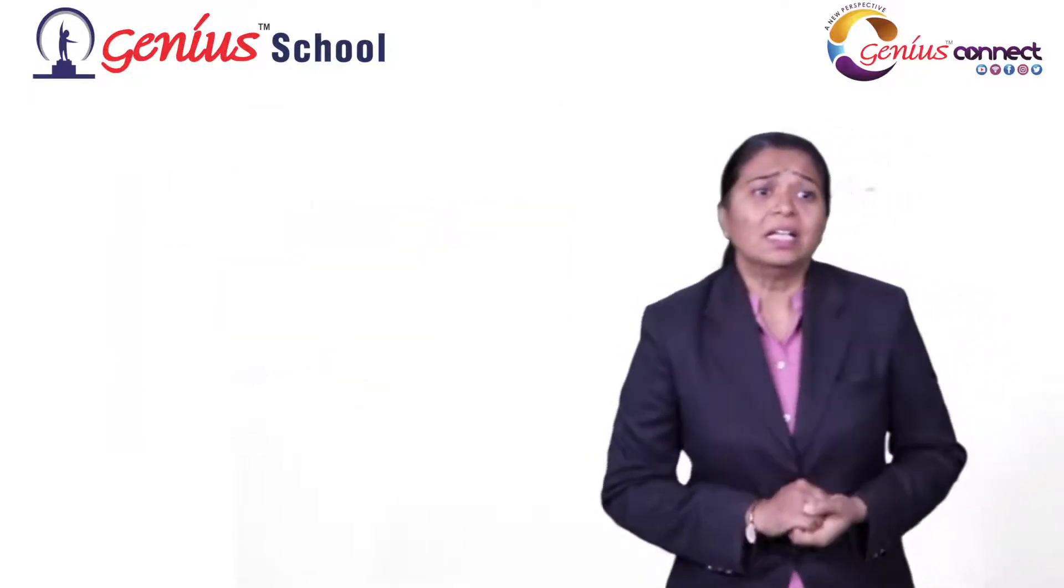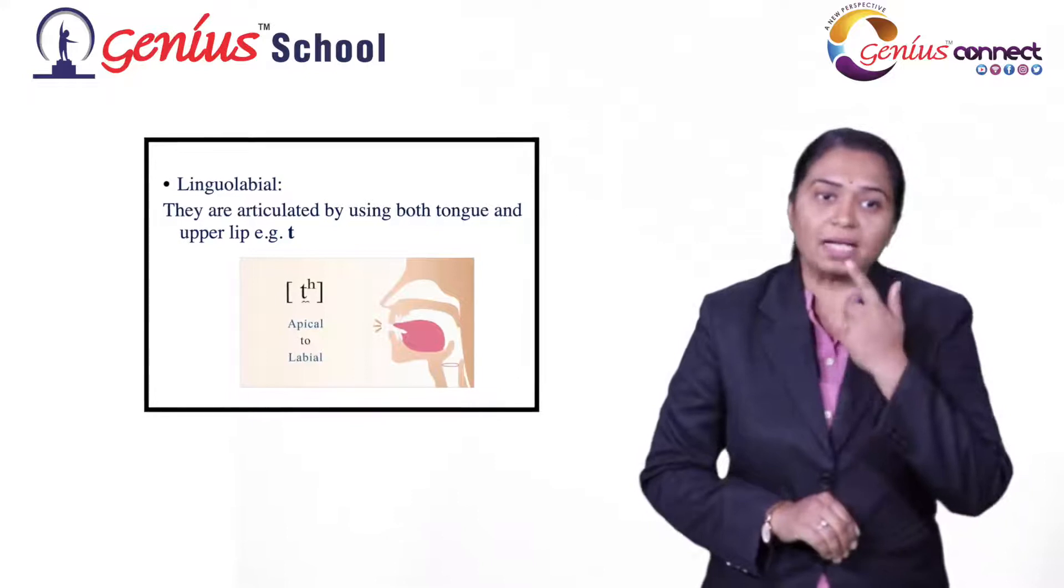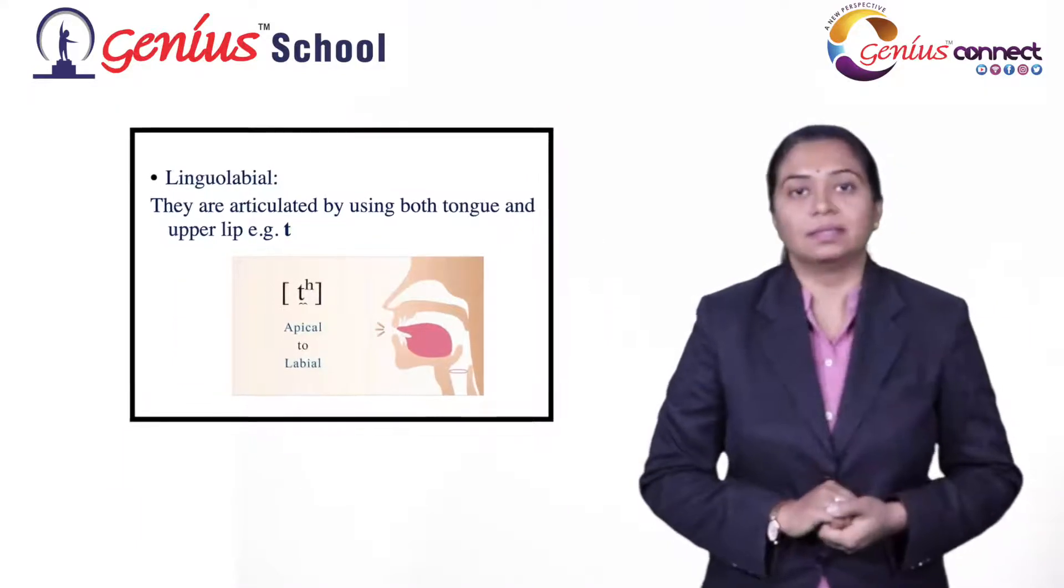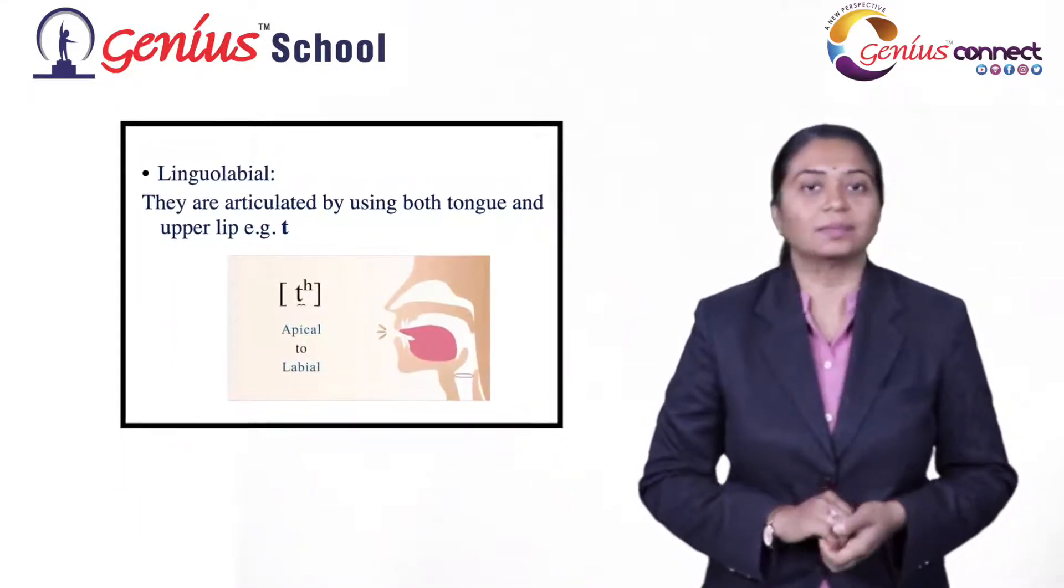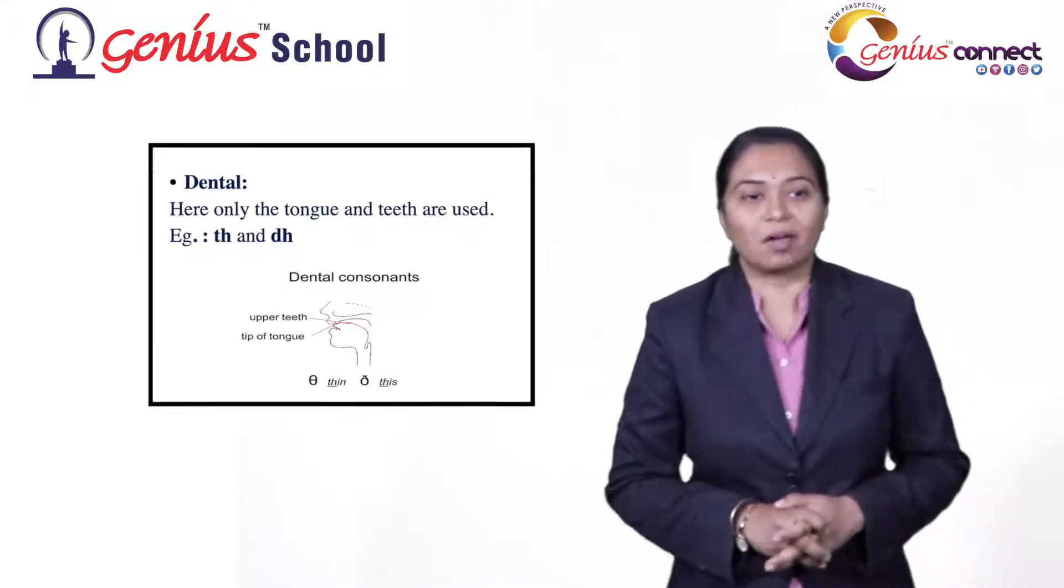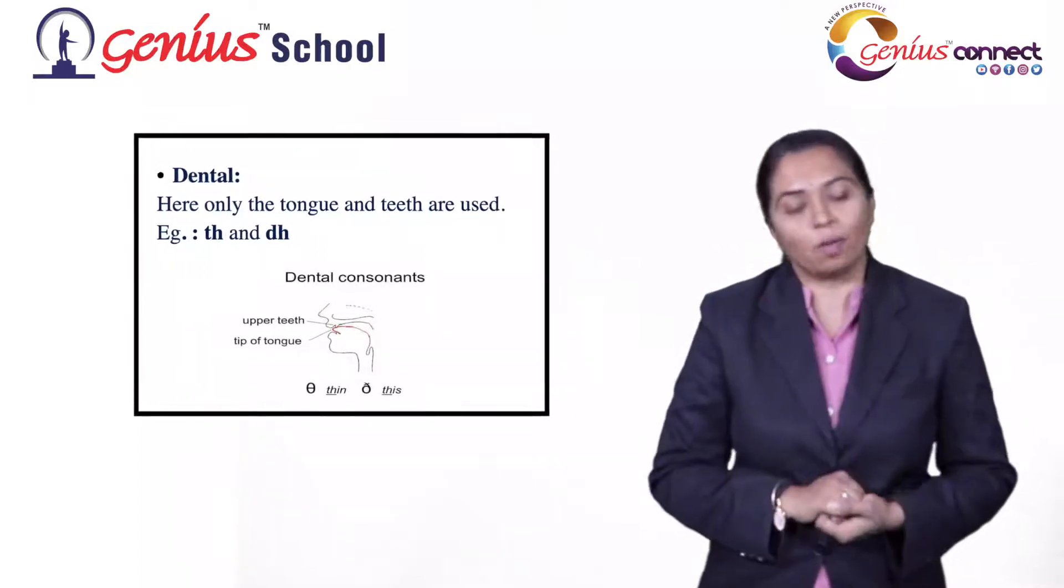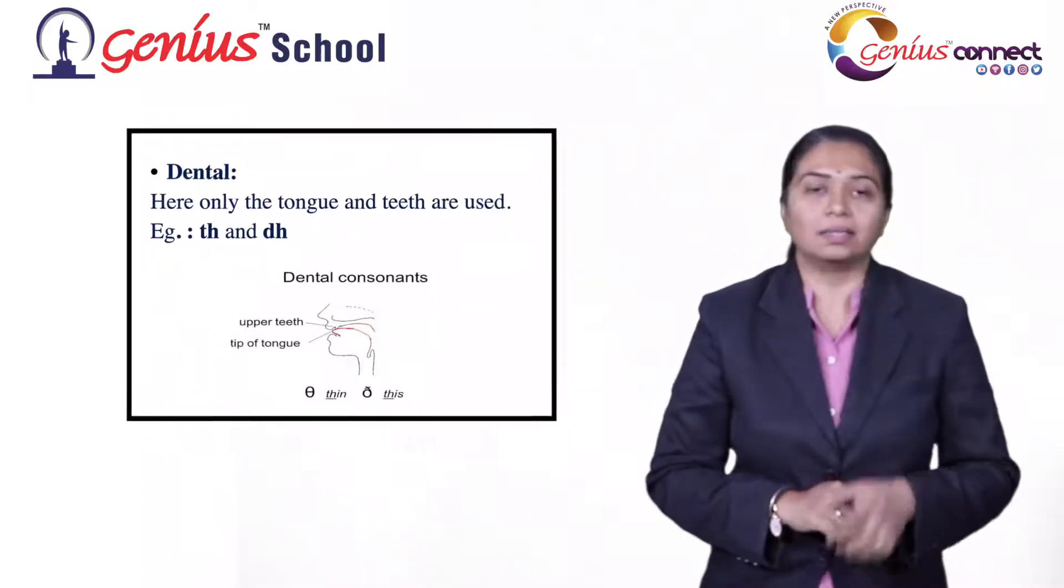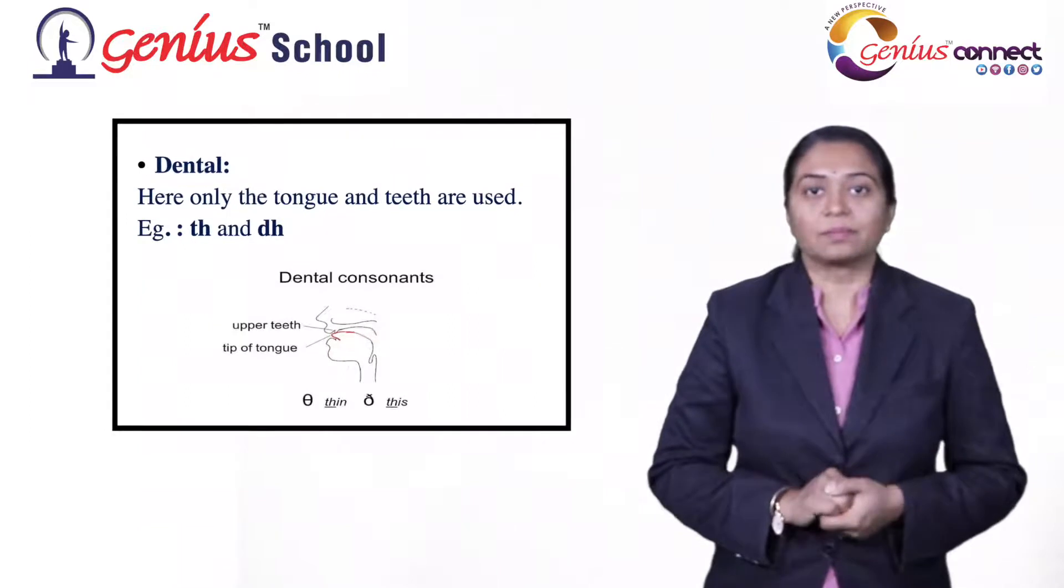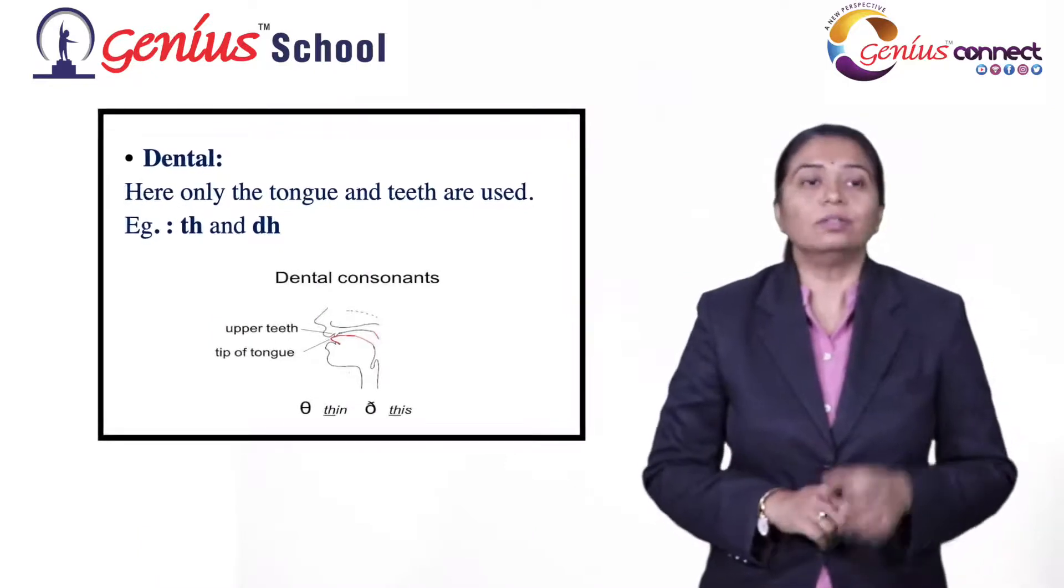Next is lingo-labial, where sounds are articulated with tongue and upper lip, tongue and upper side of your mouth, top teeth. Fourth is dental, where only your tongue and teeth inside the mouth are used. For example, thumb, tongue should touch your teeth. Tha, tha, thin, thick, the. That is dental.